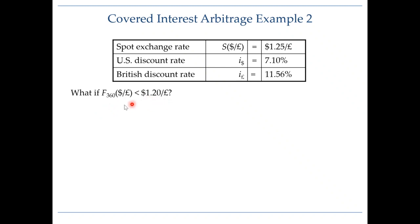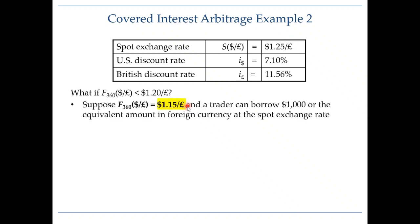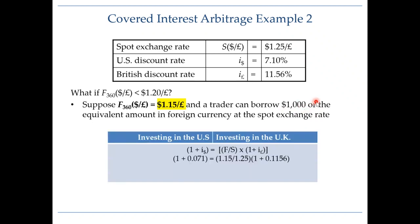In our previous example we looked at what happens when the forward exchange rate is greater than $1.20. In this case, let's take a look at when the forward exchange rate is lower than $1.20. Let's say the forward exchange rate is $1.15 per pound. For simplicity, you can borrow $1,000 or the equivalent in pounds at the spot rate — since the spot rate is $1.25, that means you can borrow either 800 pounds or $1,000.